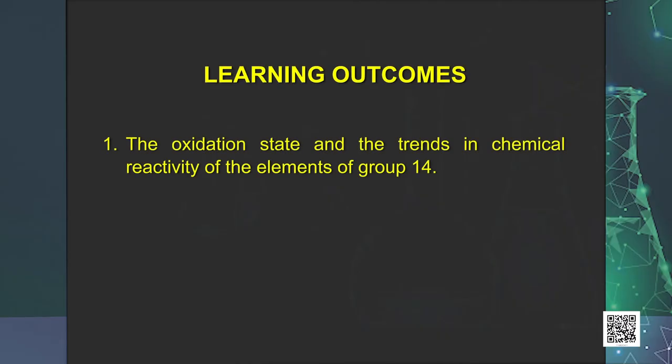Hello learners. In the previous episode we learned about some important compounds of boron and aluminium along with their uses. We also gathered the basic knowledge about the elements of group 14 such as their electronic configuration, trends of radii, ionization enthalpy, etcetera. Now, let us continue our discussion with the chemical properties of elements of group 14 and some allotropes of carbon.